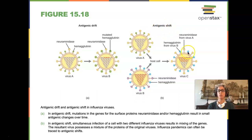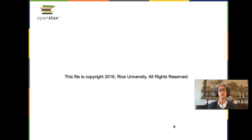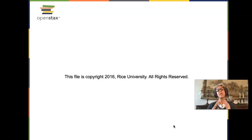Two viruses coming together and recombining their genomic segments can produce whole new combinations of hemagglutinin and neuraminidase that the human population has never encountered before. That's a brief overview of the ways microbes can get into us and cause problems. Next, we'll discuss the immune system, and then move into diseases organized by body system — because the ways pathogens invade a particular body system, whether bacterial, eukaryotic, or viral, will be similar within that system.